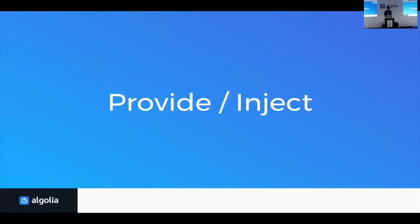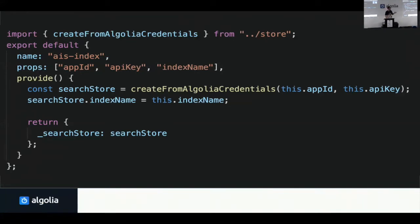Every component needs to interact with the search store, so we need to make sure it's available to every component. For that, we leverage the provide/inject feature of Vue, which is pretty recent. The provide/inject feature is a simple way to define a kind of global variable and let all components underneath it accept that variable. It's very handy when you have a wrapping component and you want to share state with all nested components, no matter how deep they are in the tree.